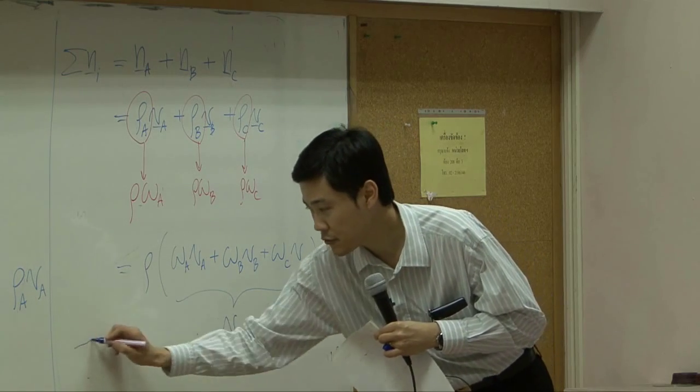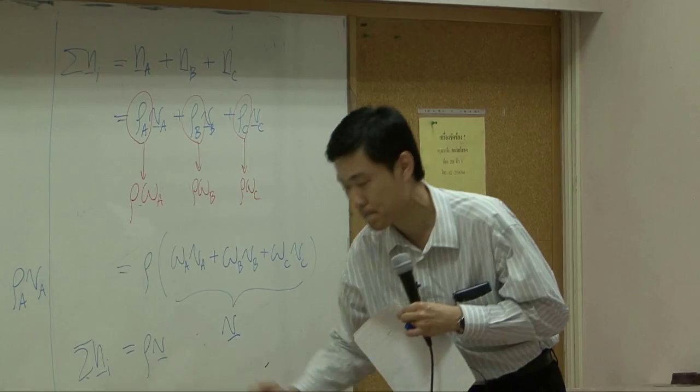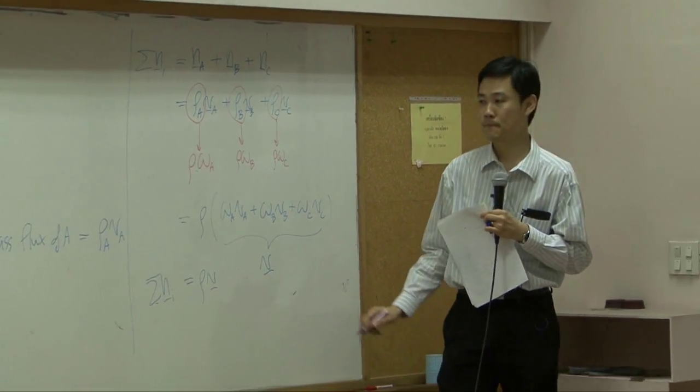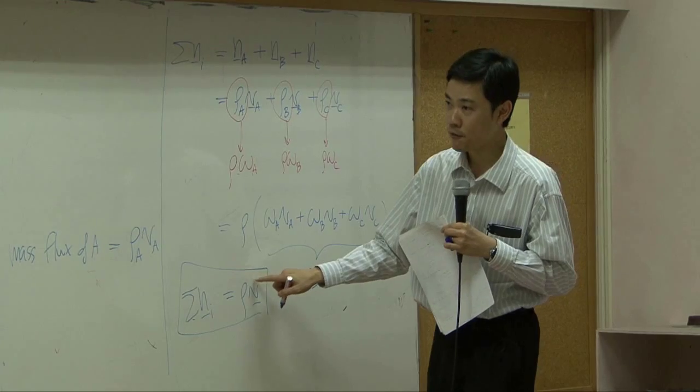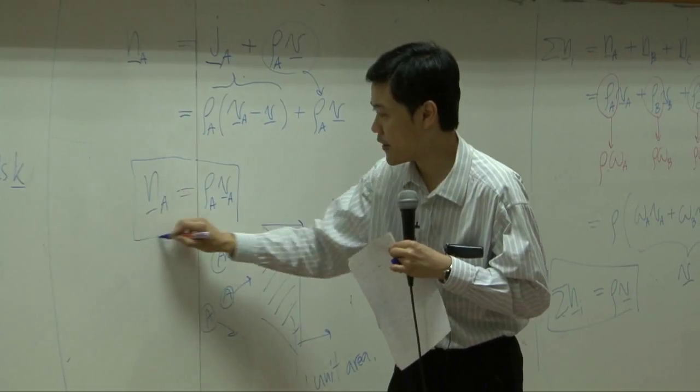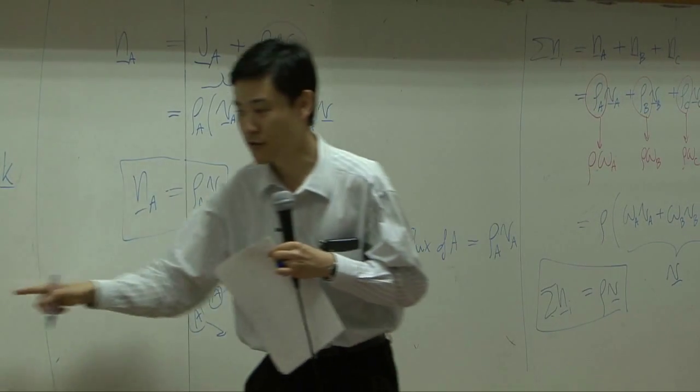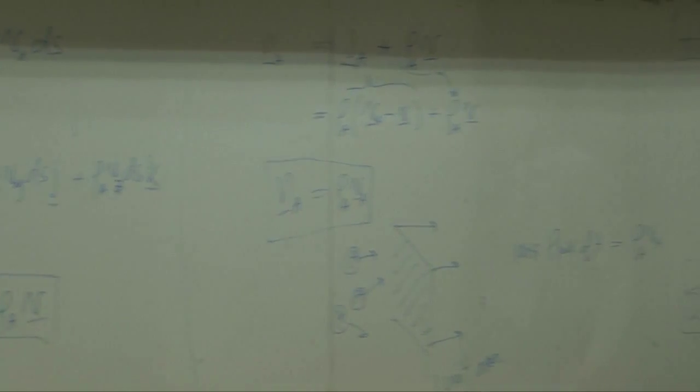So as a result, you get sigma Ni equal to rho V. This is another one. So you have rho V, you have rho A, VA, and you also have rho A, V. Three confusing terms.